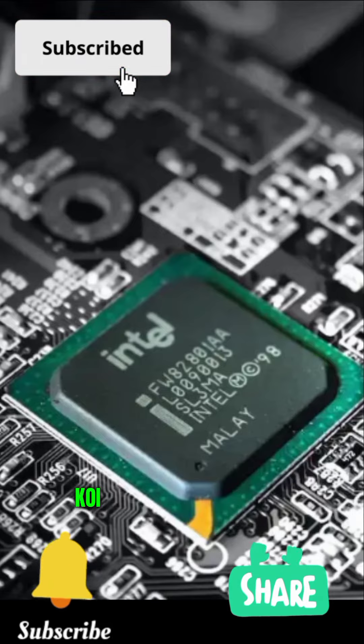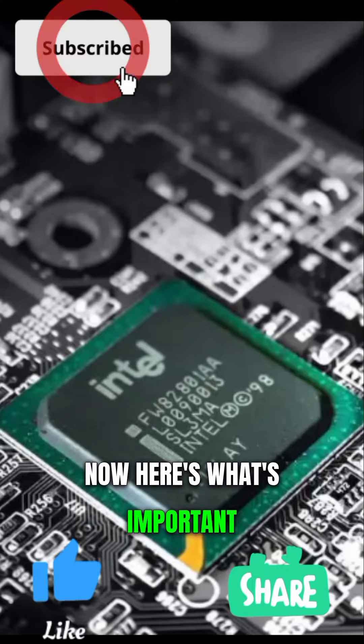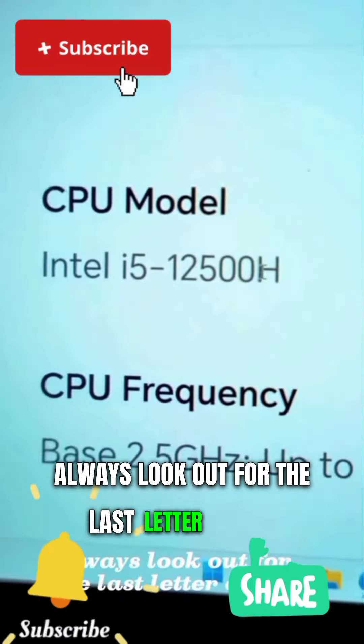And we have the Core i3, Core i5, Core i7 and more. But that's not the real deal. Now here's what's important. Always look out for the last letter of the processor description.